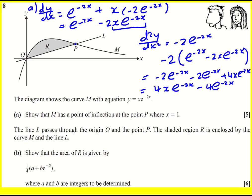Now it says to show that M has a point of inflection where x is equal to 1. So we don't actually have to obtain x equals 1, we can use it. So when x equals 1, d2y by dx squared is going to be 4 e to the minus 2x minus 4 e to the minus 2x, so it's equal to 0.